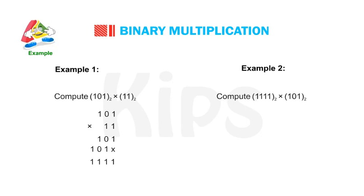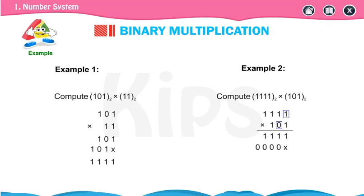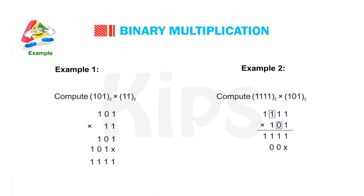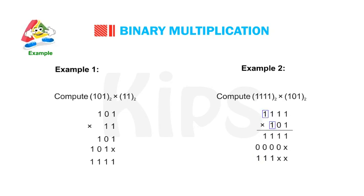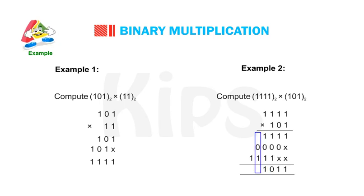Example 2: Compute binary 1111 multiplied by binary 101. 1111 × 101: the first partial product (1 × 1111) gives 1111; the second partial product (0 × 1111) gives 0000; the third partial product (1 × 1111) gives 1111. Adding with carries: 1; 1 + 0 = 1; 1 + 0 + 1 = 0 carry 1; 1 + 0 + 1 + carry = 1 carry 1; 1 + 1 = 0 carry 1; 1 + 1 = 0 and 1 — giving the final result.